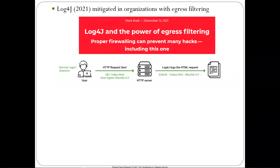This is the saving grace for log4j. When that bug hit, people thought it was a total disaster because it was embedded in Java and nobody was going to recompile everything — it would be there forever. People expected Armageddon, but it turned out less bad than feared because most organizations were actually doing egress filtering.